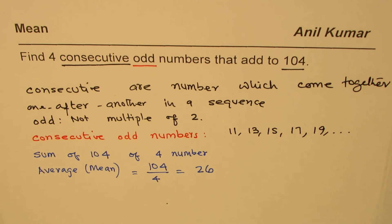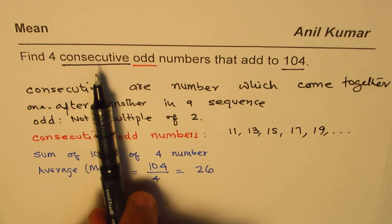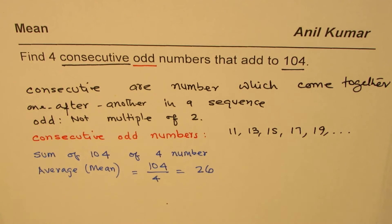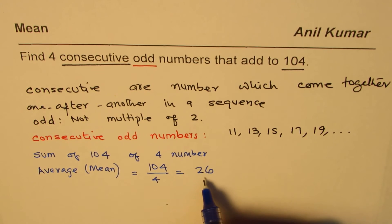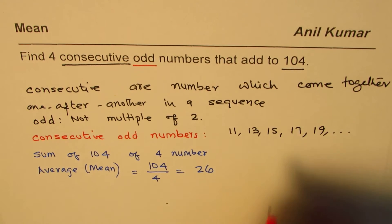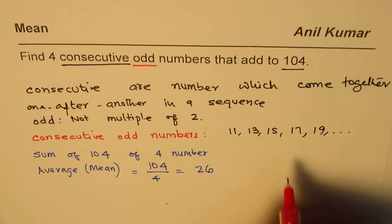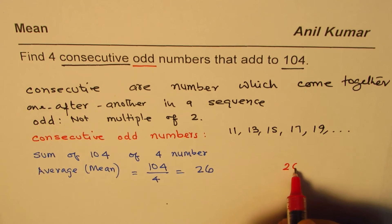We get 26 as the mean. So mean, which is the center value, is 26. Now we have to figure out four consecutive odd numbers. 26 is even, it doesn't help us, but can we find the answer with the help of 26?